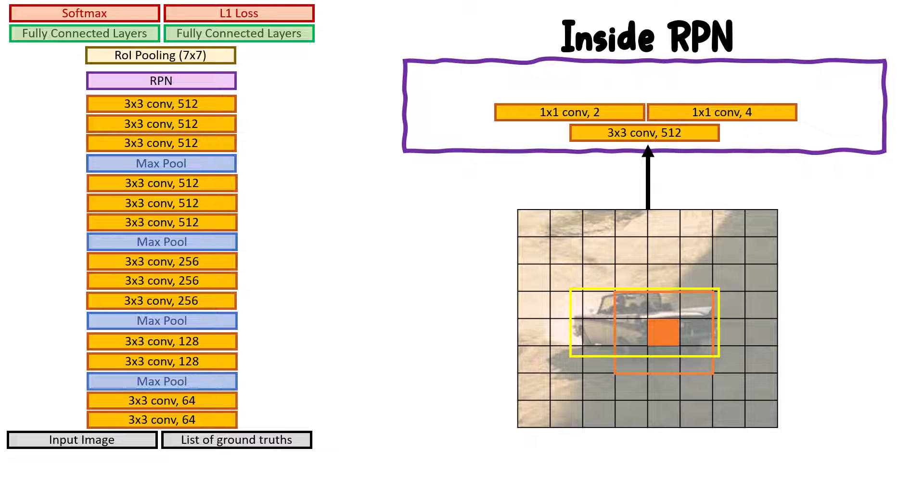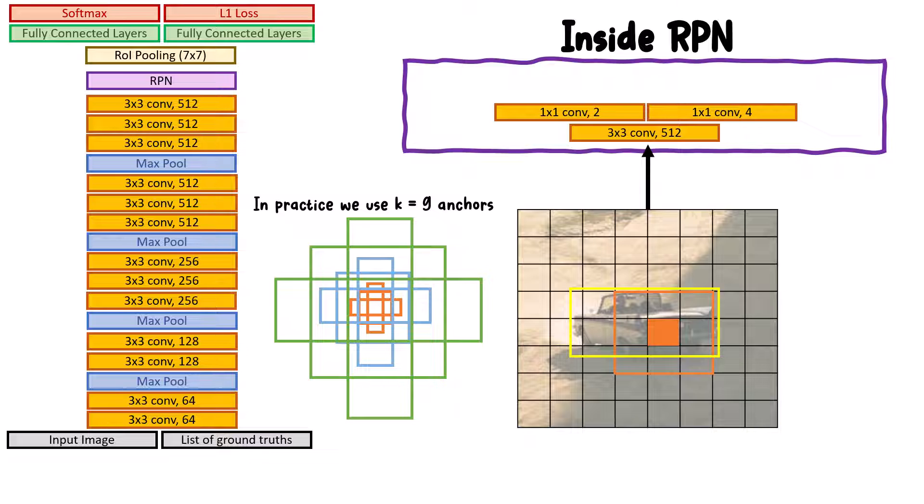In practice, one anchor box is not enough. We usually use nine anchor boxes with different sizes and different aspect ratios. So instead of having those two conv layers, we use conv layers with 2k channels and 4k channels. That's the whole general idea.